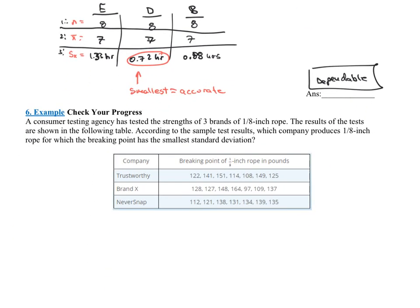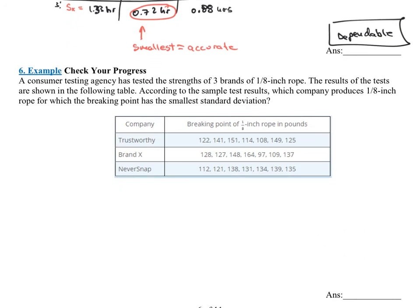Let's go ahead and repeat this idea in the next problem. It says a consumer testing agency has tested the strength of three brands of eighth inch rope. The results of the tests are shown in the following table. According to the sample tests, which company produces eighth inch rope for which the breaking point has the smallest standard deviation? So this is huge. Imagine if your life is lying on the ability of this rope to hold your weight or whatever that rope is holding. Okay, you cannot have that rope break. So for instance, if they say it's going to weigh or hold 120 pounds, it better hold 120 pounds and not break before that. So you got to be really, really careful with these results.